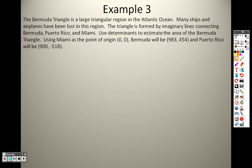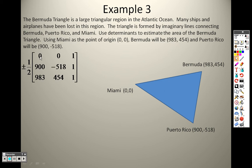The Bermuda Triangle is a large triangular region in the Atlantic Ocean. Many ships and airplanes have been lost in this region. The triangle is formed by imaginary lines connecting Bermuda, Puerto Rico, and Miami. Use determinants to estimate the area of the Bermuda Triangle. There's Miami at 0, 0. Puerto Rico at 900, negative 518, and Bermuda at 983, 454. Note the order will not matter, it'll still give you the same answer.